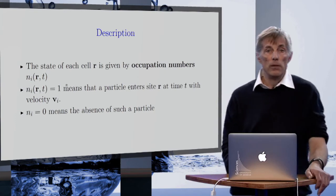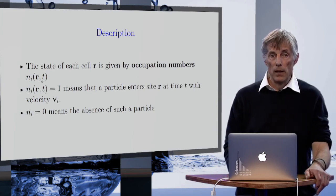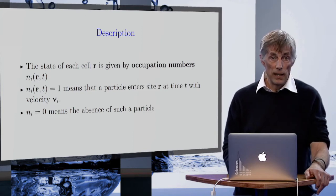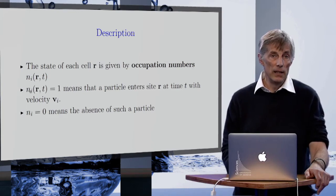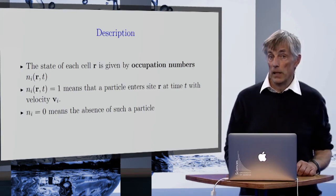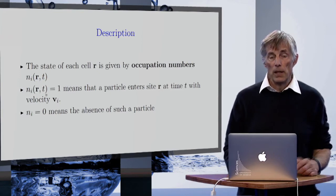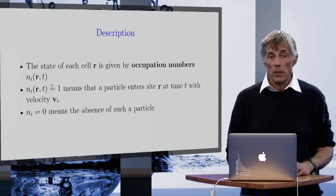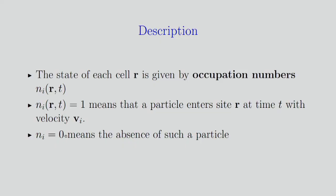When it's 1, it means that you do have a particle entering the lattice site R at time t with velocity i, Vi. This i is the index of the velocity which can be left, up, right, and down in a simple example.